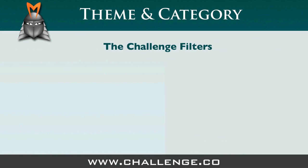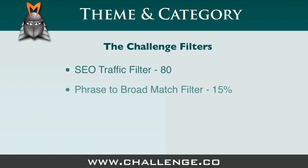For the challenge, here are the filters that we recommend. In terms of traffic, we're looking for keywords that have the potential to generate at least 80 visitors per day, so our SEO Traffic filter will be 80. The second filter will be a Phrase to Broad Match filter of at least 15%, which ensures that the phrase is something real people are searching for. And with regards to competition, we're looking for keywords that have less than 30,000 competing websites, so our SEO Competition filter will be 30,000.